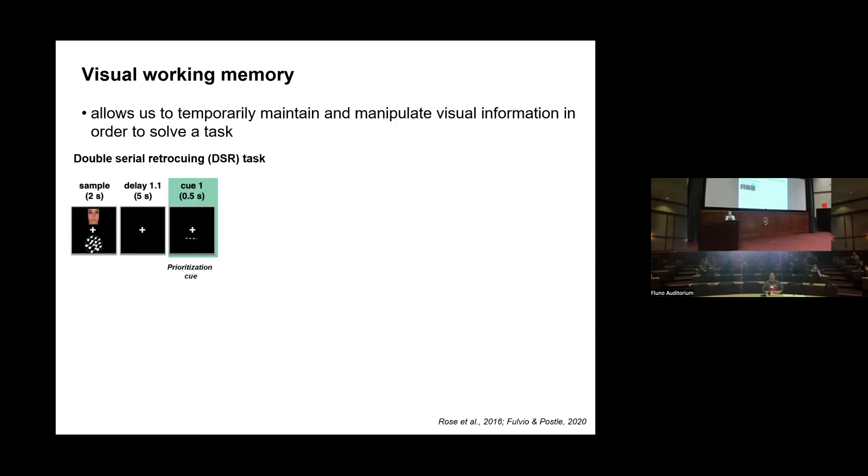Then a retro cue comes up very briefly. In this case it's a dashed line, and you can see it's positioned below the cross. That tells the participant that we're going to test them on the item that was shown below the cross, in this case the moving dots. We call this a prioritization cue because in your memory you're prioritizing the information that occurred below the cross and putting aside the information that occurred above it, but you don't want to forget it because you still might need it later.